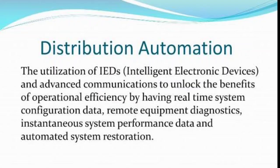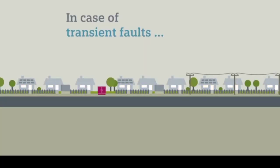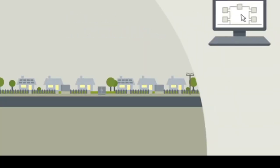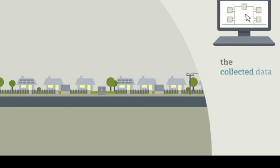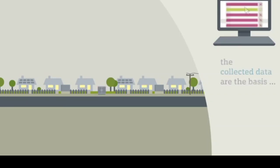Majorly, Distribution Automation is a family of technologies including sensors, processors, communication networks, and switches that can perform a number of distribution system functions — not only fault detecting, fault isolation, and giving feedback to the system, but also power factor correction can be done by using Distribution Automation.